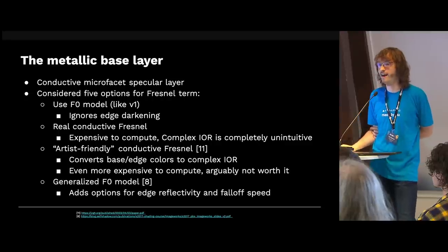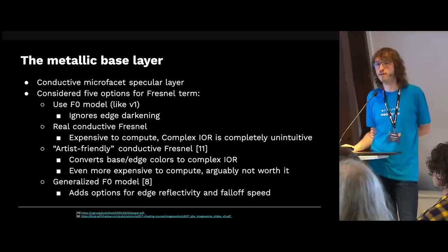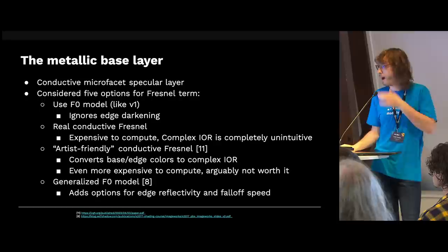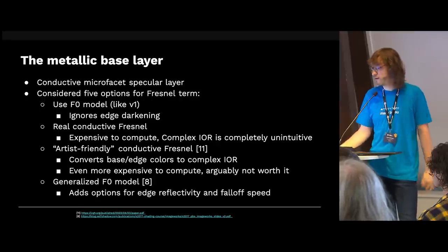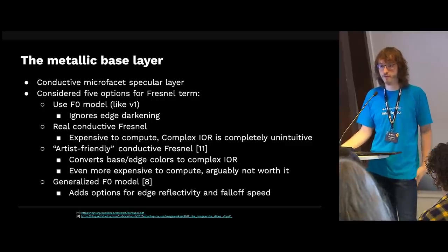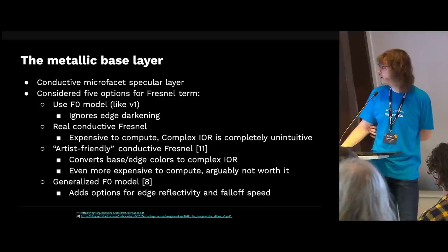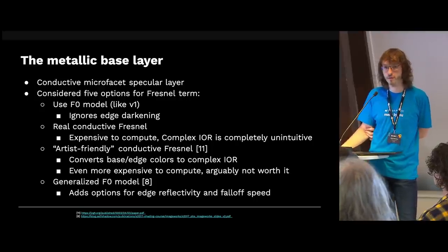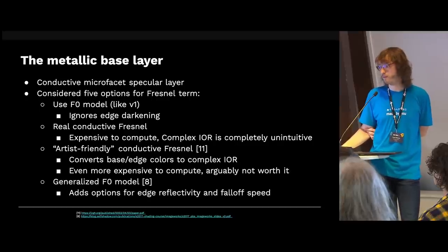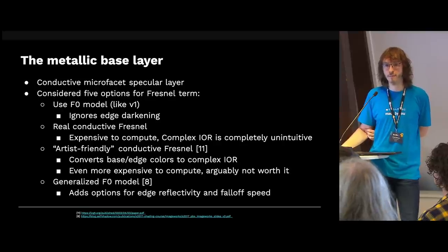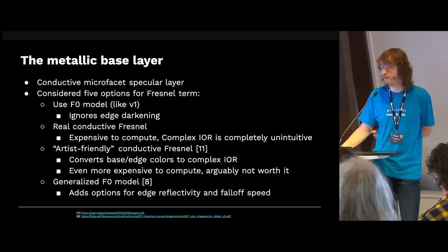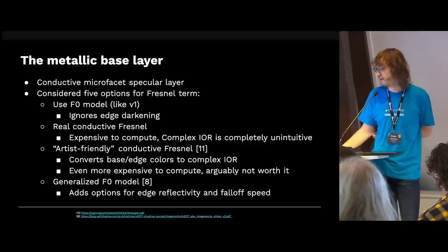Then there's the metallic layer — this is where it gets interesting. The F0 Fresnel model is not really super accurate for metals and we can do better. What are the options? We could just continue using the F0 model like the current Principled BSDF does, but you get this edge darkening effect ignored. We could use the real conductive Fresnel equations — that would be super accurate — but they're quite expensive to compute and complex IORs are unintuitive for artists. The artist-friendly conductive Fresnel paper has a method where the user selects an edge color and a base color and it automatically computes the complex IOR, but you still have to compute the conductive Fresnel plus the conversion — that's even more expensive.